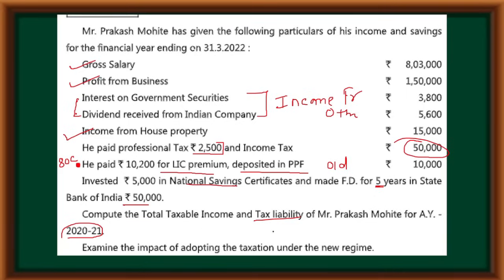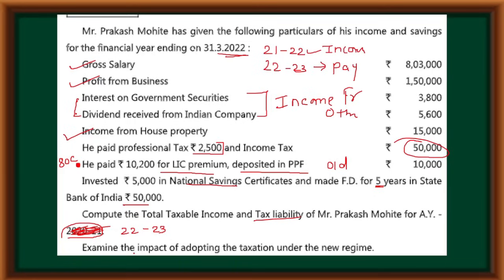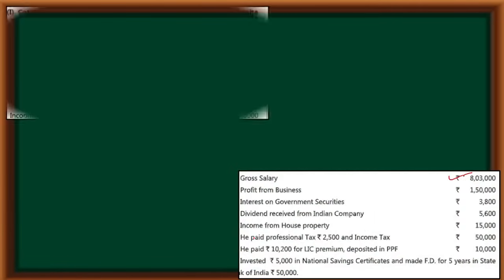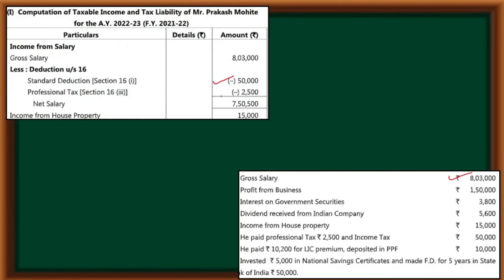So if the financial year is 2021-2022, then the assessment year should be 2022-23. There may be a printing mistake but keep your mind clear and proceed carefully. Financial year 2021-2022 — the next year is our assessment year. This year we have income and this year we pay income tax. Let's examine the impact of adopting taxation under the new regime. Let's see which regime is better.